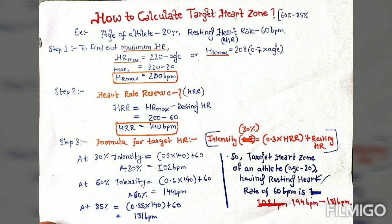Now to find the target heart rate at a given intensity, for example 60% of aerobic exercise intensity, the formula is: (0.6 × Heart Rate Reserve) + Resting Heart Rate = (0.6 × 140) + 60 = 144 beats per minute. You can use this formula to find target heart rate for various intensities. Thank you for watching Physiology of Sports and Exercise.